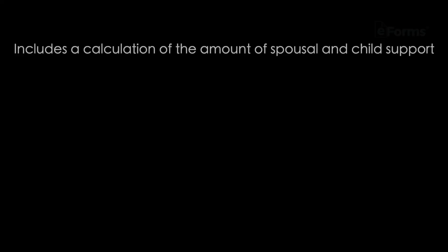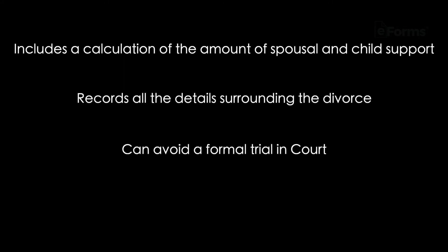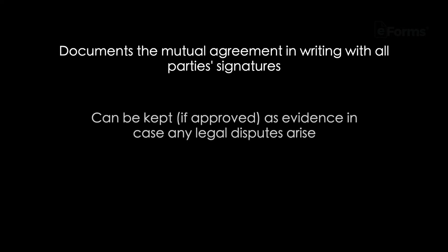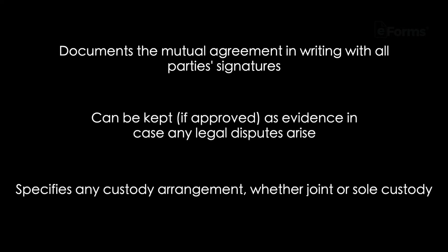A mutually agreed upon document can be created and presented to a judge for approval without a formal trial. Besides a marital settlement agreement's practical nature, it's also important as it includes a calculation of the amount of spousal and child support, records all of the details surrounding the divorce, can avoid a trial in court, allows the couple to divide their joint assets including real and personal property, documents the mutual agreement in writing with all parties' signatures, can be kept if approved as evidence in case any legal disputes arise, and specifies the custody of a child whether joint or sole custody.